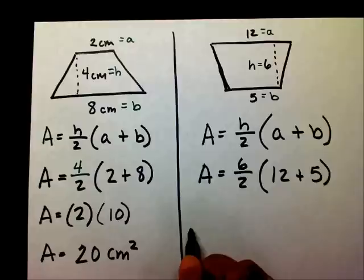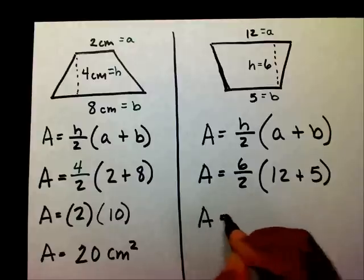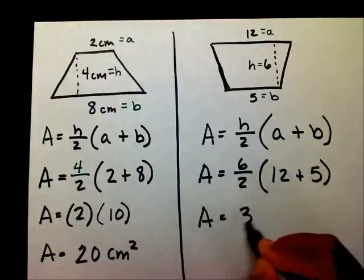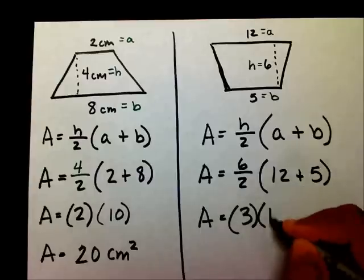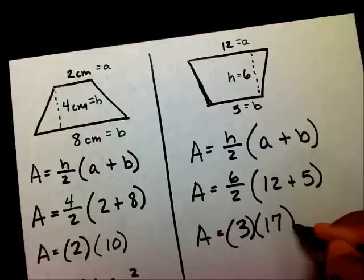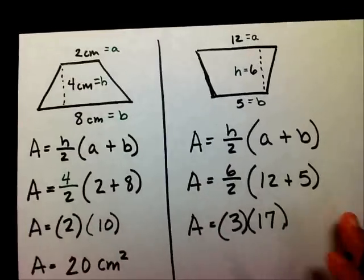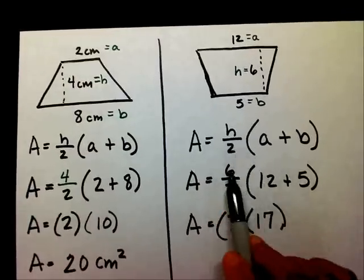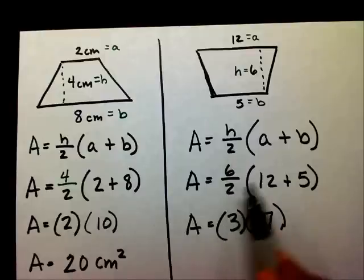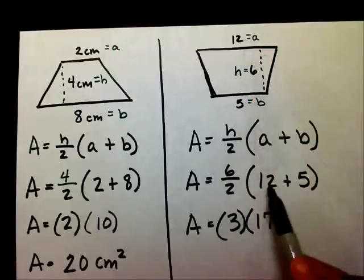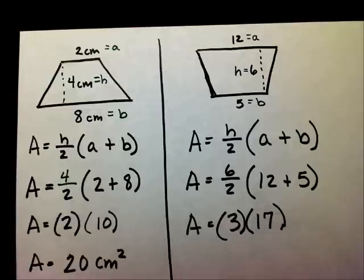So, I'm going to write a equals 6 divided by 2, and 12 plus 5 is 17. So, what I did, I substituted everything in. I substituted my 6 in for my h, divided by 2, and I substituted my a and my b, and I got the sum here.